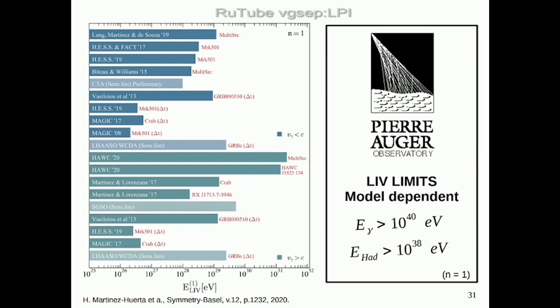Just to give an idea: previous measurements of LIV limits ranged between 10^{-29} to 10^{-31}, and with the analysis I showed you we managed to set limits at 10^{-40} or 10^{-38}. These are very good limits for the first term of the expansion. Similar conclusions hold for n=0 and n=2. Moreover, these are the first Lorentz invariance limits set consistently using ultra-high-energy cosmic ray data. Thank you very much.